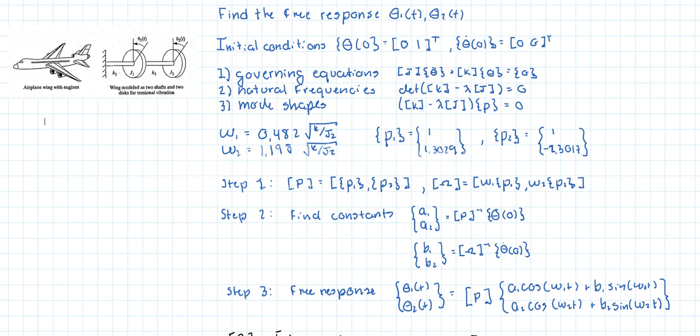Alright, so this is the third and last video spent on solving this problem. We're asked to find the free response for theta1 and theta2. We're given the initial conditions for the displacements at time equals zero, of course. And so we have an initial displacement of zero and one. We also have initial velocities. Both of them are equal to zero.